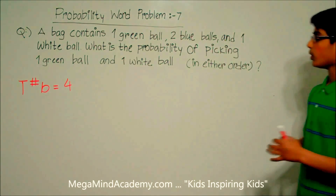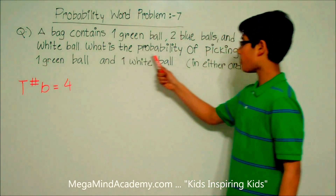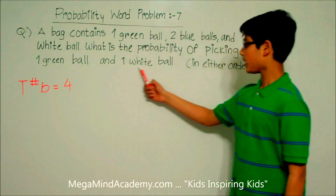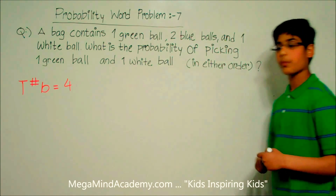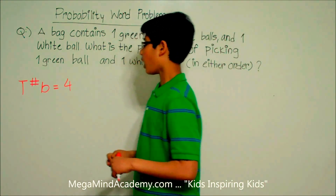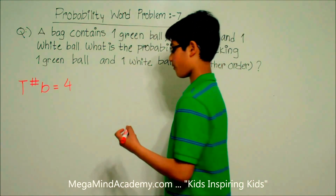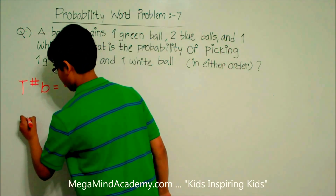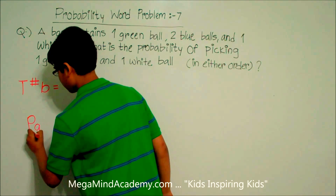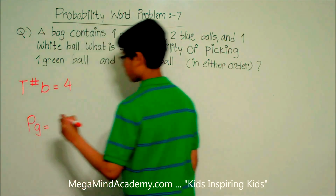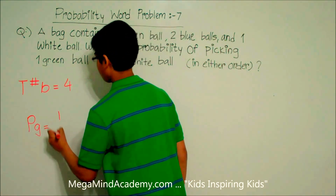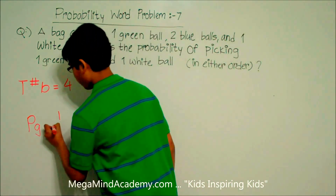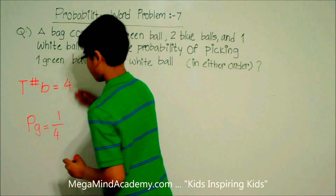We need to find the probability of picking a green ball and a white ball in either order. The probability of picking a green ball as your first pick — P(G) — is equal to one fourth, because there is one green ball out of four total balls.